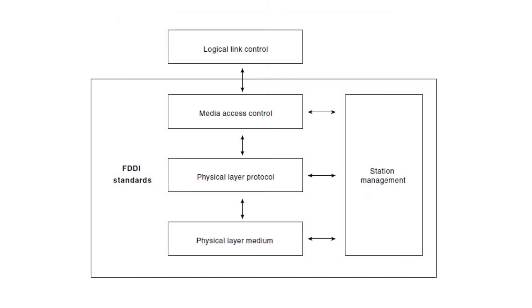FDDI is similar to IEEE 802.3 Ethernet and IEEE 802.5 Token Ring in its relationship with the OSI model. Its primary purpose is to provide connectivity between upper OSI layers of common protocols and the media used to connect network devices.